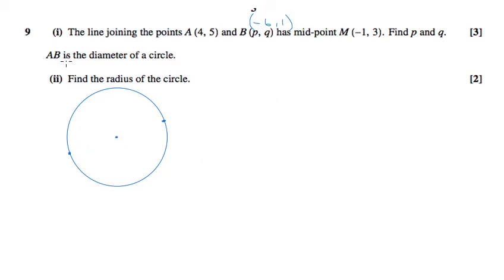Okay, for part 2, it tells us that AB is actually the diameter of a circle, which therefore makes M the centre of the circle.